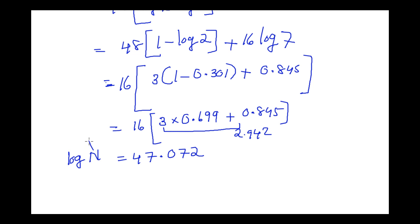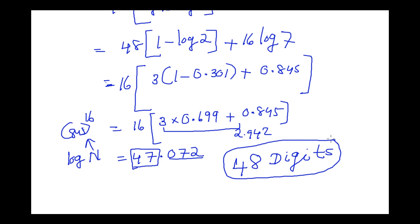Now this is the logarithm of the number 875 raised to 16. The logarithm is 47. The whole number part is 47. It is 47 plus a fraction, a positive fraction. So the number of digits in 875 raised to 16 will be 48. There will be 48 digits.